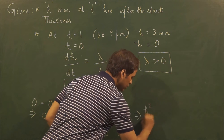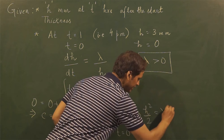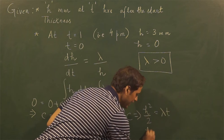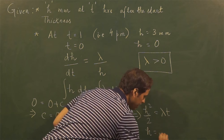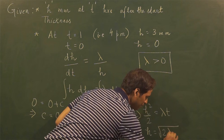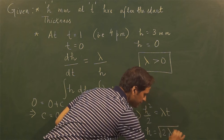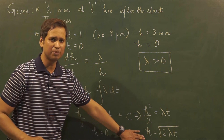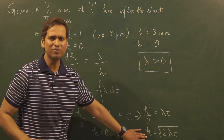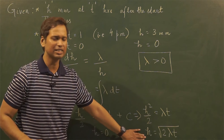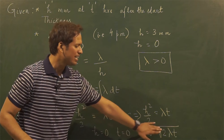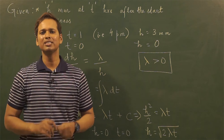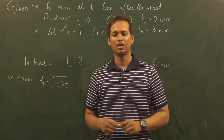Dropping c since it equals zero, the equation becomes h²/2 = λt, or equivalently h = √(2λt). It is evident from this expression that the height or thickness of the ice varies as the square root of time. This solves the second part of the question.